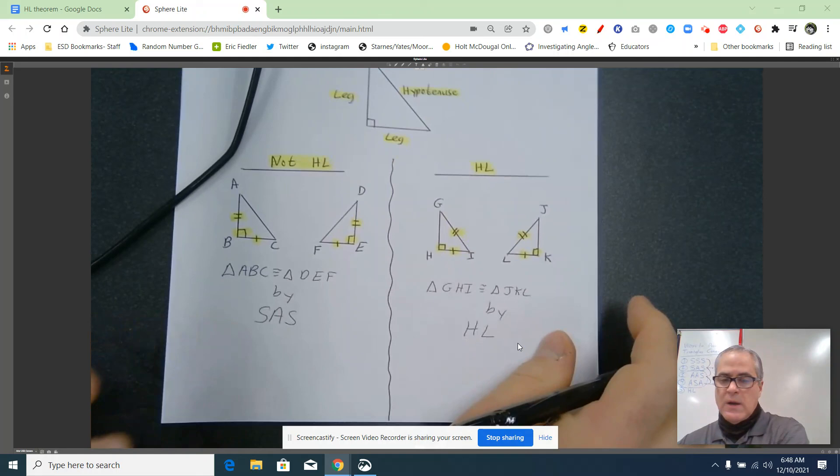You could actually have two right triangles that are not congruent at all. I'm not showing that situation. I'm just showing the most common mistake and a correct way to use HL. Thanks for listening.